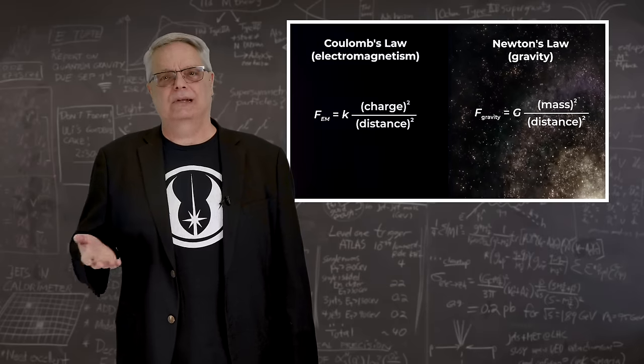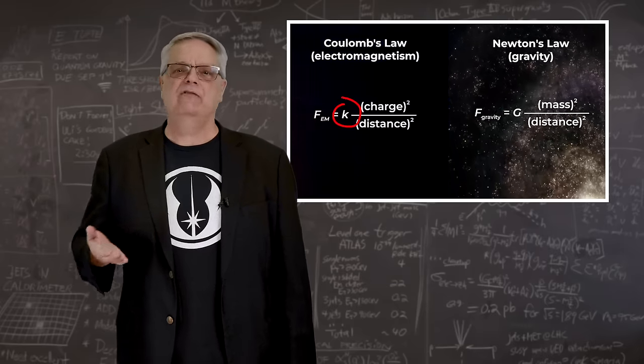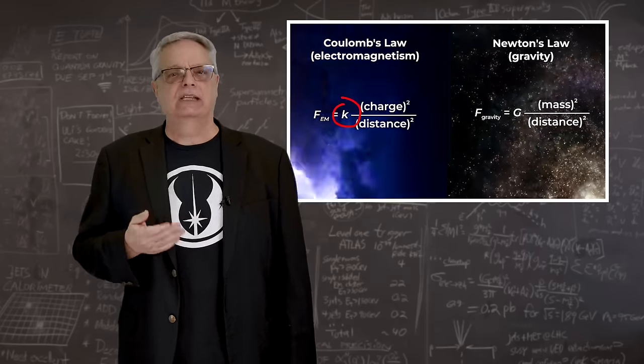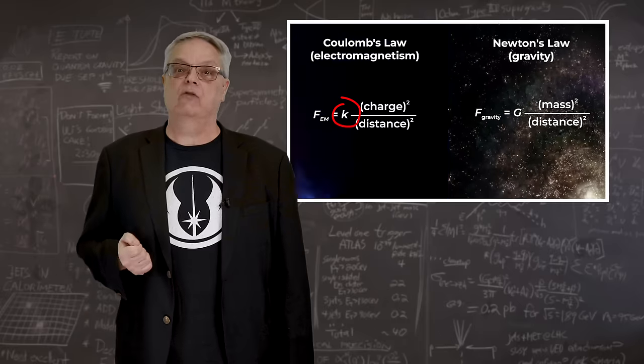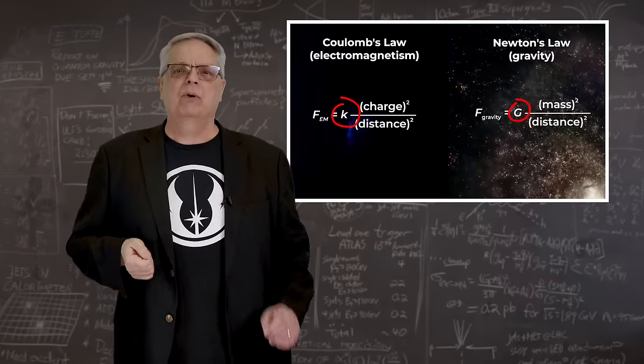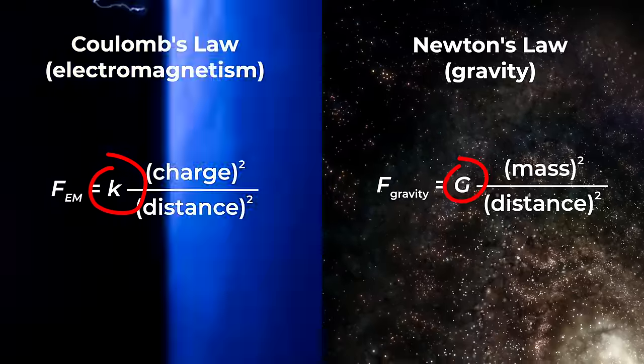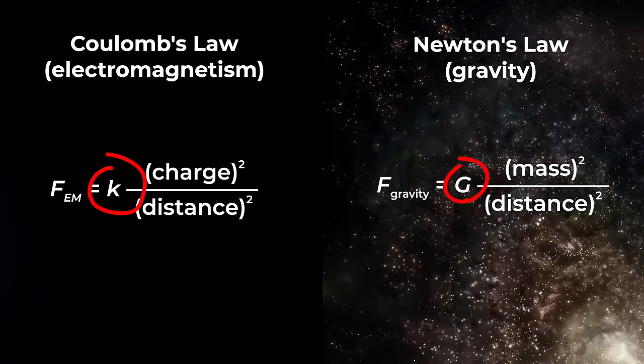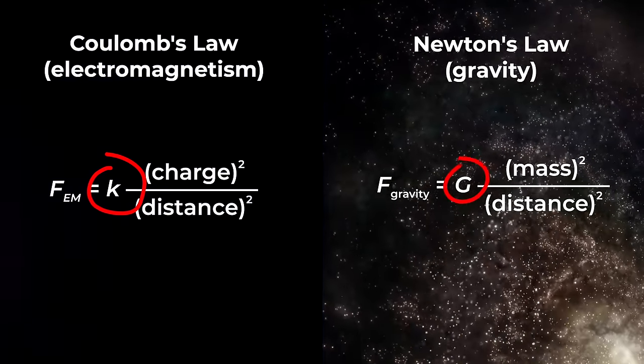Now, there are some subtleties here. The k variable in the Coulomb equation sets the strength of the electromagnetic force, while the g term sets the strength of gravity. But both of those depend on the units: the unit of electric charge in case of electromagnetism, and mass in the case of gravity.